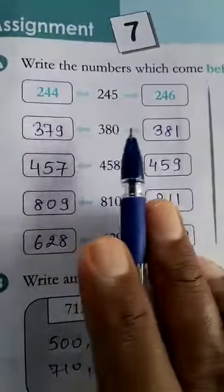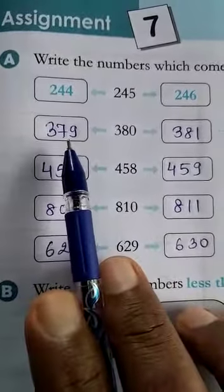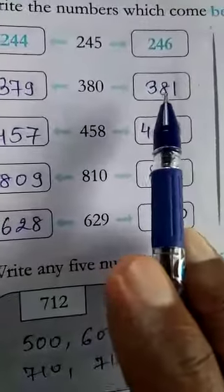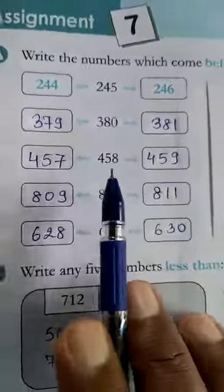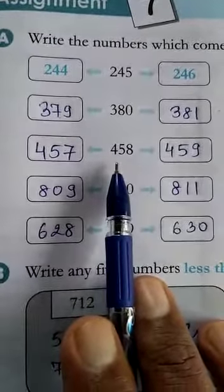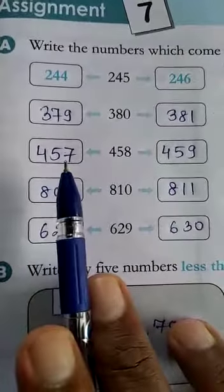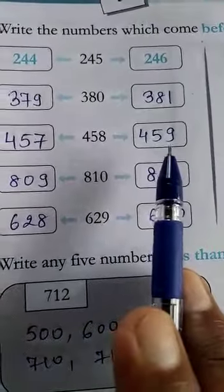Now, next number is 380. Here, before number is 379 and after number is 381. Next number 458. Before number is 457, after number 459.